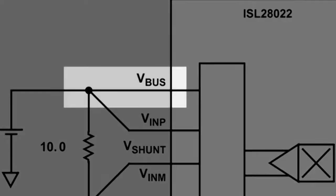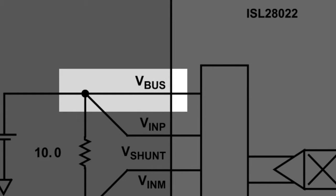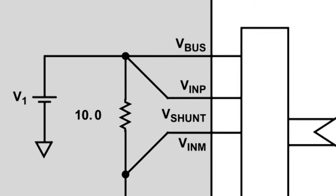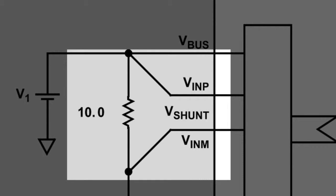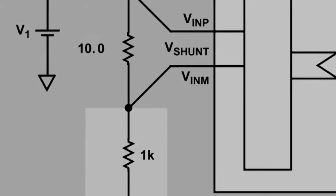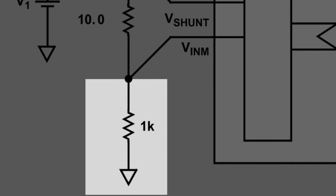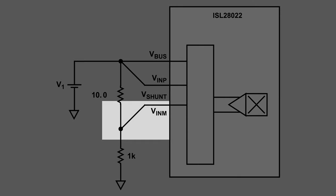For this circuit, I have VBUS connected to the top of a resistor divider with the VINP. The shunt resistor is 10 ohms. This is used as a shunt resistor to measure current. And then the load is 1K, as you can see here. The VINM is connected between the 10 ohm resistor and the 1K ohm resistor.